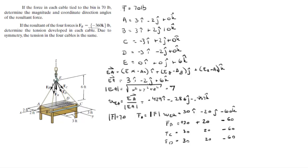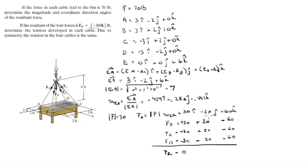F_A goes to the quadrant positive x, negative y. F_B goes to positive x, positive y. F_C goes to negative x, positive y. F_D goes to negative x, negative y. Adding all forces together: 30 + 30 − 30 − 30 = 0 for i; −20 + 20 + 20 − 20 = 0 for j; and −60 − 60 − 60 − 60 = −240 for k. So the resultant force is −240k.